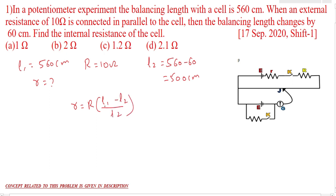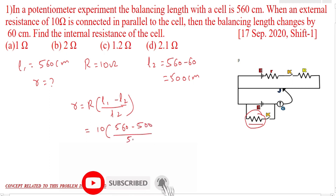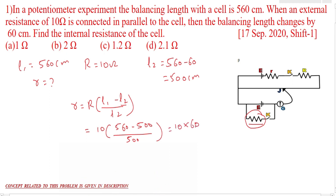Where L1 is the balancing length without external resistor, and L2 is the balancing length with external resistor in the secondary circuit. Substituting: r equals 10 into (560 minus 500) by 500, which is 10 into 60 by 500. This simplifies to 1.2 ohm.